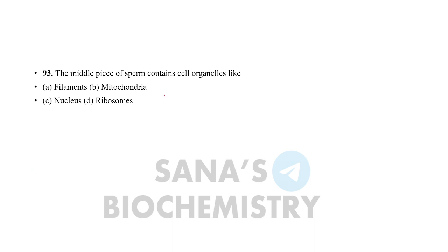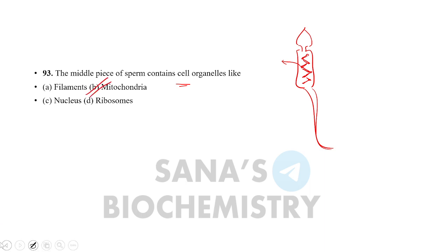Next question: the middle piece of the sperm contains a cell organelle called — options are filament, mitochondria, nucleus, and ribosome. The middle piece contains mitochondria, because the sperm needs movement and energy. Mitochondria will produce that energy. Mitochondria is called the powerhouse of the cell.